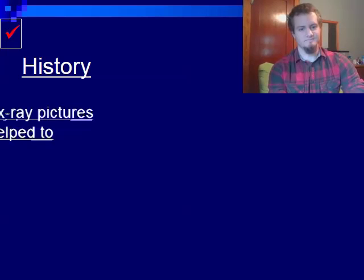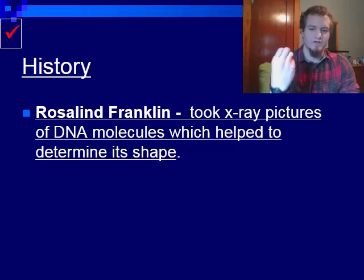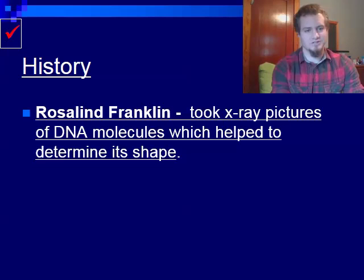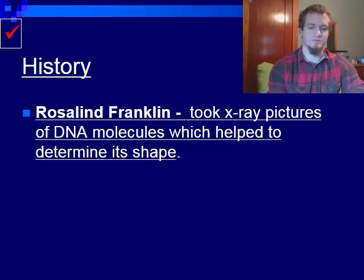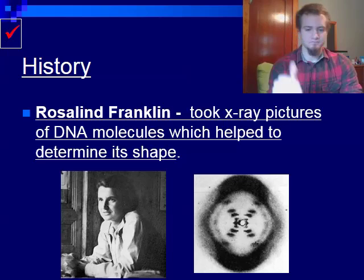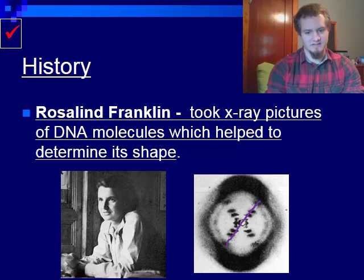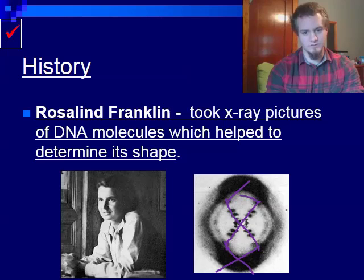The first person in the history of DNA we need to discuss is a woman by the name of Rosalind Franklin. She went ahead and took x-ray pictures of DNA molecules, which helped to determine its shape. She took an x-ray of the cell and found this x-like shape, which led to the discovery that DNA has a double helix — kind of like a spiraling ladder type shape. As you can see in the image, it's got this spiral-like pattern that gives us a real nice spiraling helix.